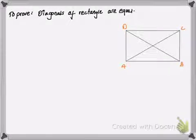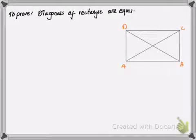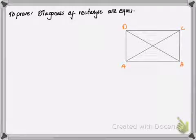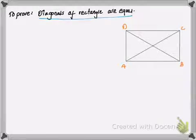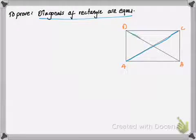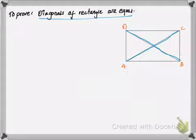Hello and welcome back to my video tutorial on vectors. In this tutorial we'll be looking at another question based on vector proof, and what we're going to do is prove that the diagonals of rectangles are equal. Here we can see that AC and BD are the diagonals of rectangle ABCD.